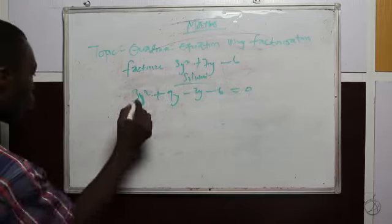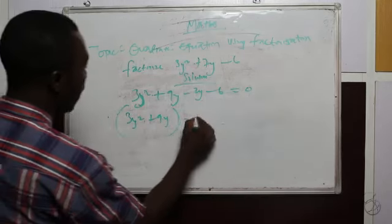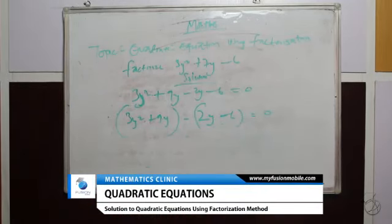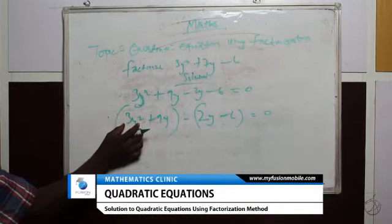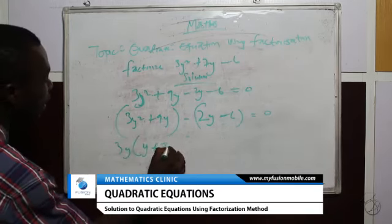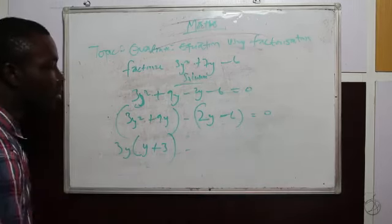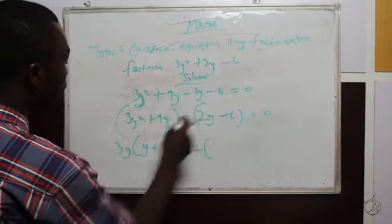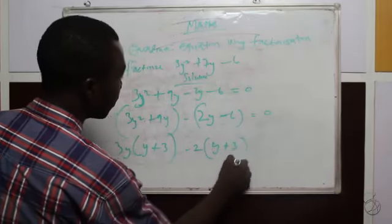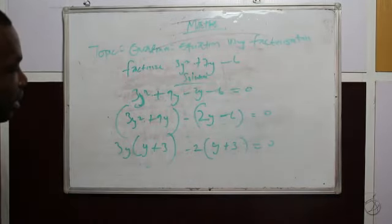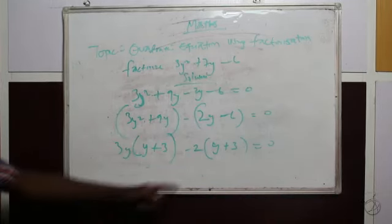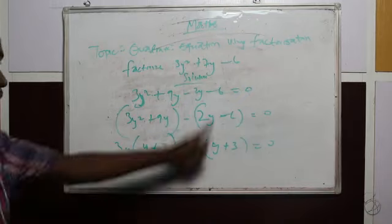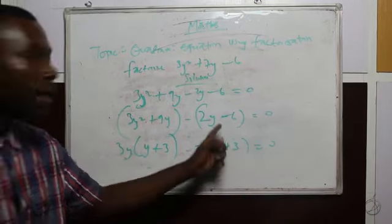So we replace +7y with +9y − 2y: 3y² + 9y − 2y − 6 = 0. The next step is grouping: (3y² + 9y) − (2y + 6) = 0. What is common between 3y² and 9y? We have 3y common: 3y(y + 3). What is common between 2y and 6? We have 2 common: minus 2(y + 3) = 0. So: 3y(y + 3) − 2(y + 3) = 0. Note: minus 2 times +3 gives −6, and minus 2 times y gives −2y, which satisfies the equation.